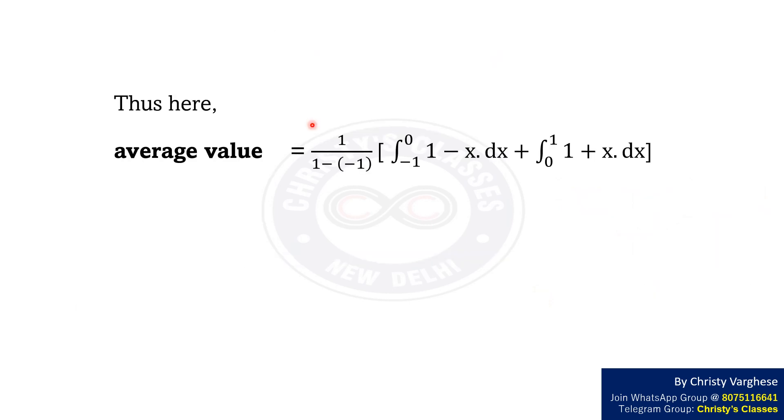Thus, here the average value equals 1 by 1 minus minus 1 into integral minus 1 to 0, 1 minus x dx plus integral 0 to 1, 1 plus x dx.